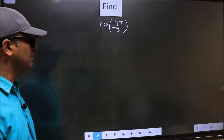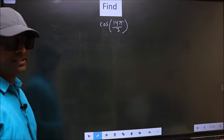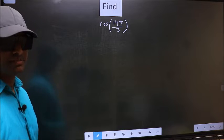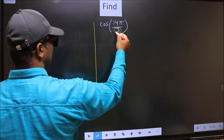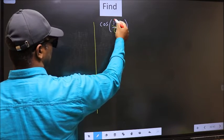Find cos 14π by 3. To find this, we should follow this method. In the denominator we have 3, in the numerator 14.